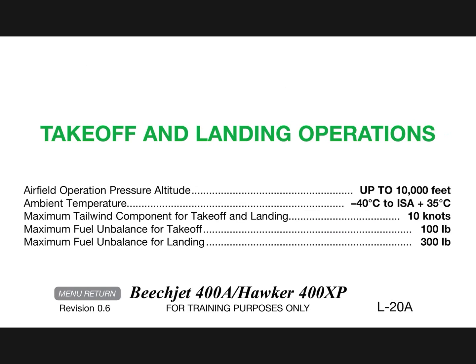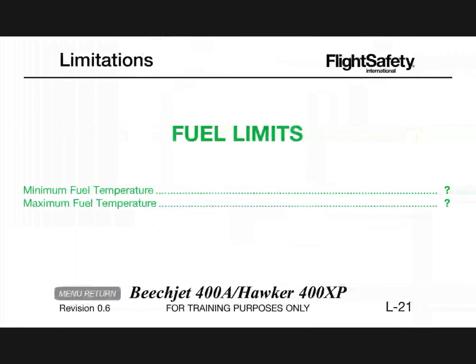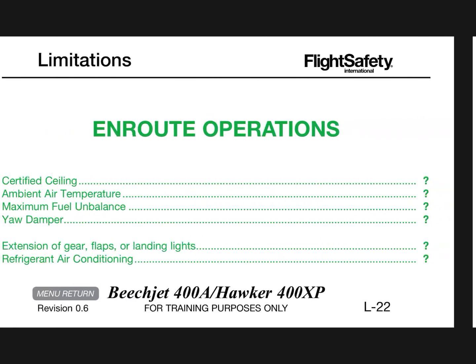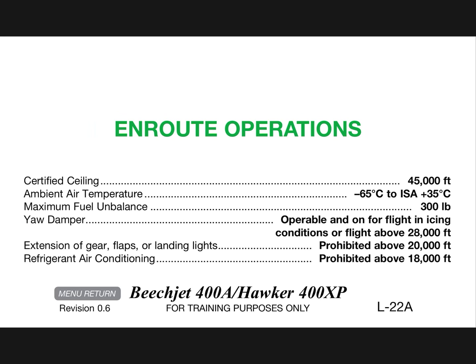Maximum tailwind component for takeoff and landing is 10 knots. Maximum fuel unbalance for takeoff 100 pounds, maximum fuel unbalance for landing is 300 pounds. Fuel limits: minimum fuel temperature minus 40 degrees Celsius, maximum fuel temperature plus 50 degrees Celsius. En route operations: certified ceiling 45,000 feet, ambient temperature minus 65 to ISA plus 35. Maximum fuel unbalance 300 pounds. Yaw damper operational and on for flight in icing conditions or flight above 28,000 feet.